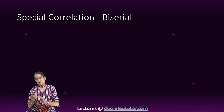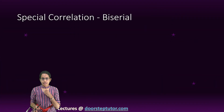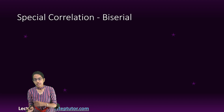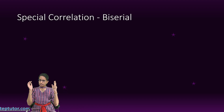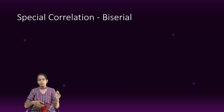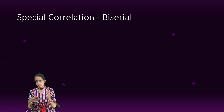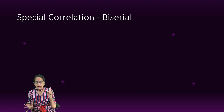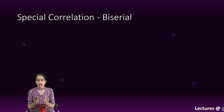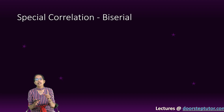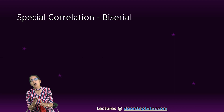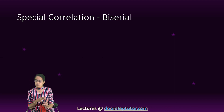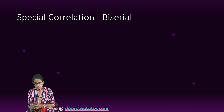So far, we talked about simple correlation. Now we would proceed with special correlation. Simple correlation means that there are two variables and the impact of the independent and dependent variable is studied on one another. Under special correlations, we would understand conditions where either one of them would be continuous or dichotomous, or both of them would be dichotomous.